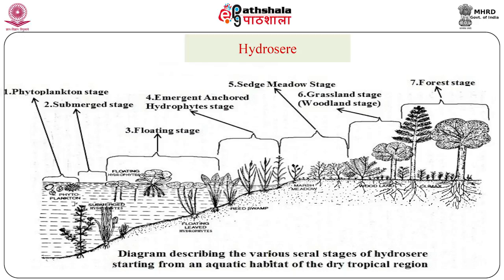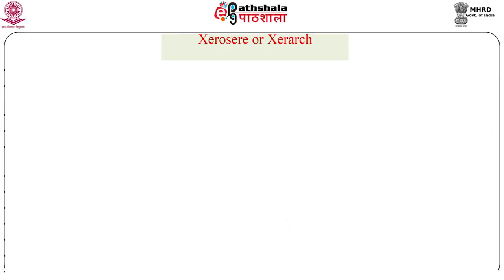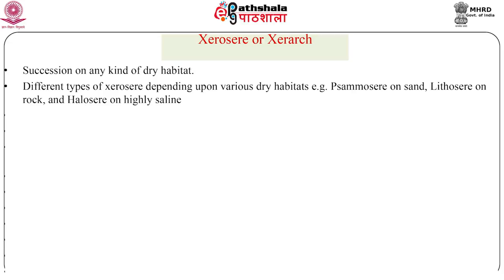The next example of succession is the xerosere or xirach. When succession begins on any kind of dry habitat, it is known as xerosere. Since dry habitats may be of different types, the consequent succession may be of the following types: for sand, the succession is called psammosere; for rock, it is lithosere; and for highly saline or physiologically dry soil, it is halosere. Below is an example of lithosere in a tropical region.